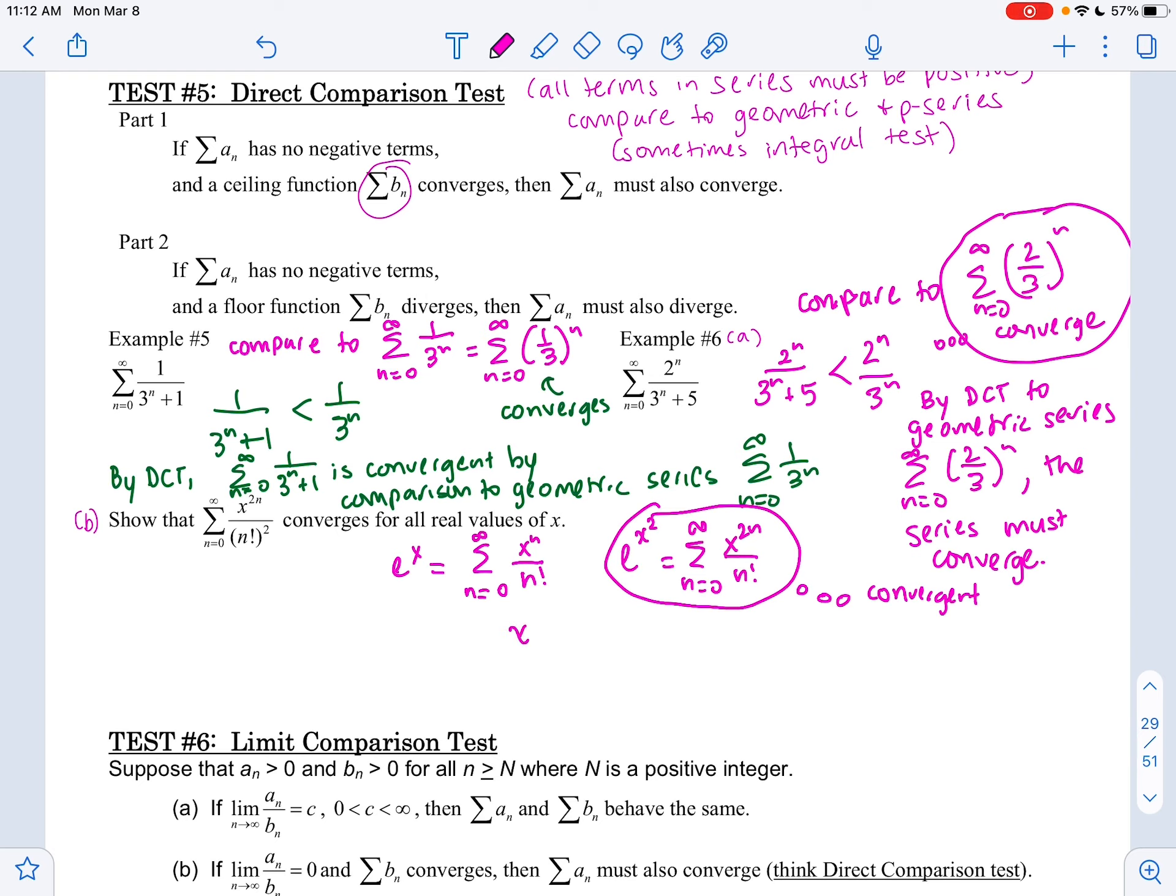So we want to show that x to the 2n over n factorial is indeed above x to the 2n over n factorial squared. When I look at the two series that I'm comparing, both of them have the same equivalent top. However, what I'm doing is I'm squaring the bottom. Squaring it is going to make it larger, particularly if n is positive. It's going to make it larger. Therefore, a larger denominator means a smaller number. And this inequality does check out to be true.